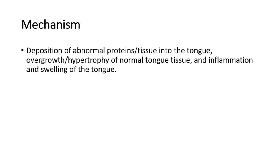The mechanism of macroglossia is due to deposition of abnormal proteins or tissue into the tongue, causing overgrowth or hypertrophy of normal tongue tissue, and inflammation and swelling of the tongue.